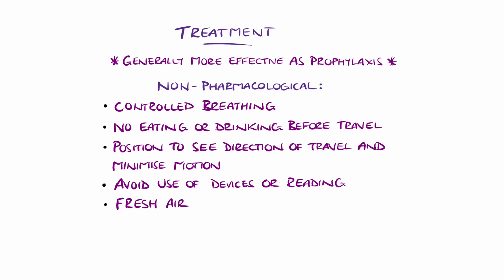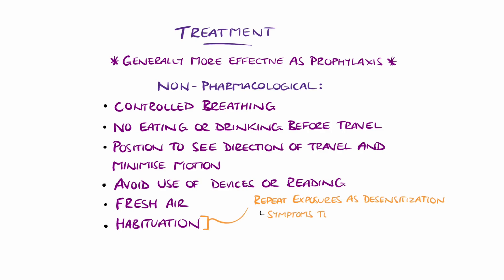Habituation is a commonly used method where the individual undergoes repeat exposures briefly as part of a desensitisation regime. However, over time, the person tends to return to baseline without repeat exposures, though symptoms do generally improve with age, and vomiting itself is less common after the teenage years.